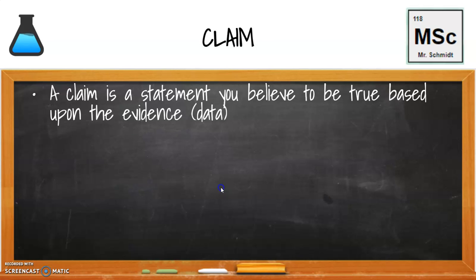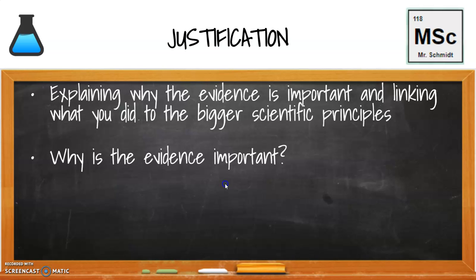The claim is a statement you believe to be true based upon the evidence. It's the data that you gathered and why you believe that to be true. The justification, again, is the reasoning. Explaining why that evidence is important and linking what you did to the bigger scientific principles. Why is the evidence that you gathered important? Why is it meaningful to your claim?